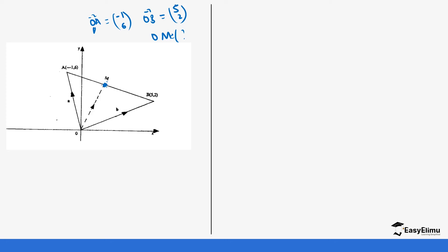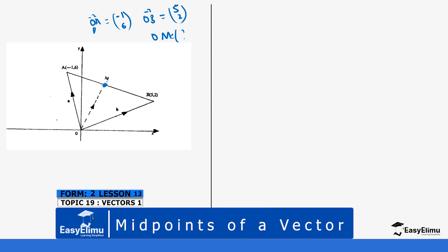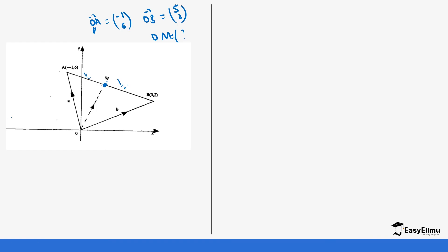So how are we going to do that? Since M is at the center, it means it's dividing AB into two halves. To move from the origin to M we can use different directions — we can use OA then AM, or we can use OB then BM.